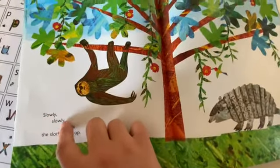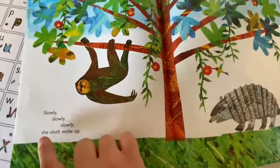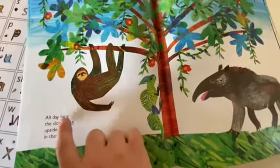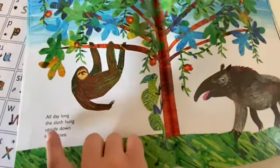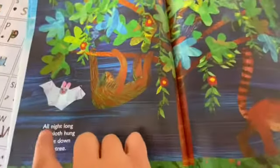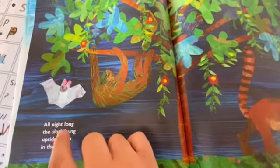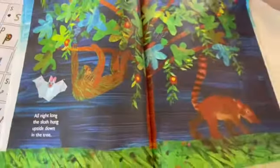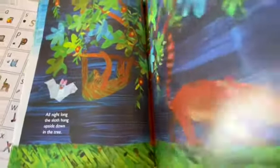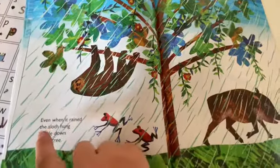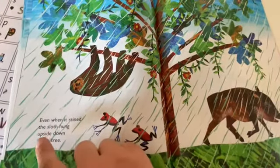Slowly, slowly, slowly, the sloth woke up. All day long the sloth hung upside down in the tree. All night long the sloth hung upside down in the tree. Even when it rained the sloth hung upside down in the tree.